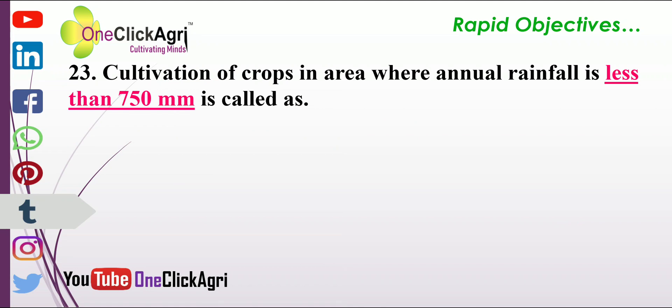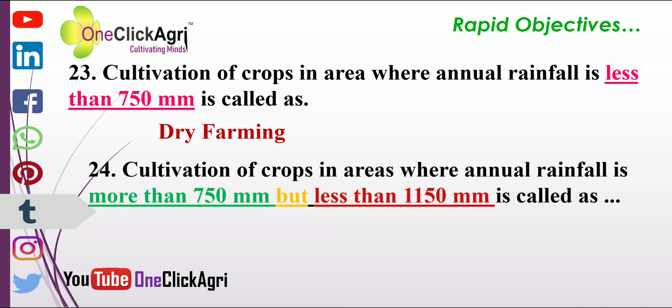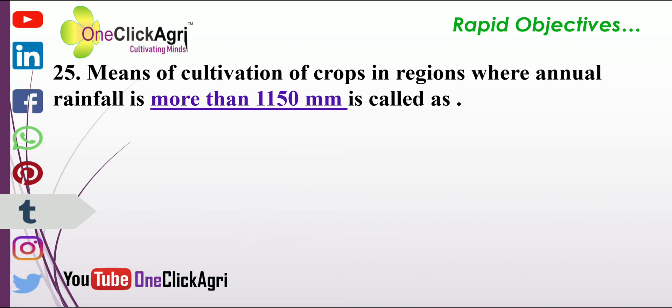Cultivation of crops in an area where annual rainfall is less than 750 millimeters is called dry farming. Cultivation of crops where annual rainfall is more than 750 mm but less than 1150 mm is called dryland farming. Cultivation of crops in regions where annual rainfall is more than 1150 millimeters is called rainfed farming.